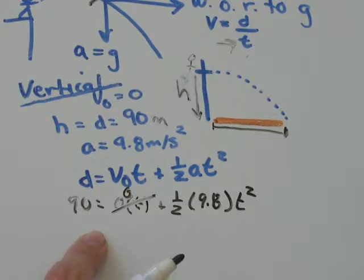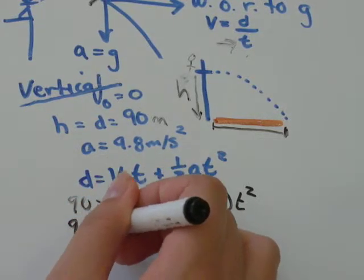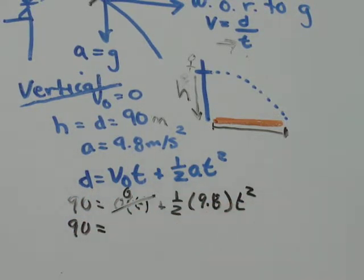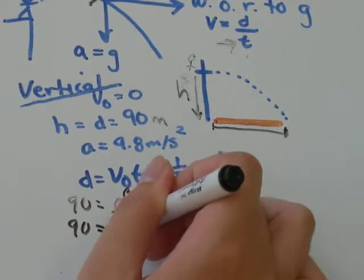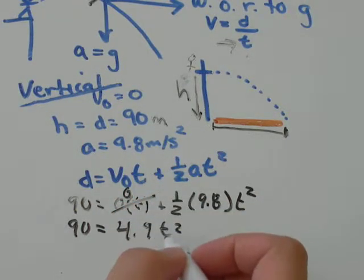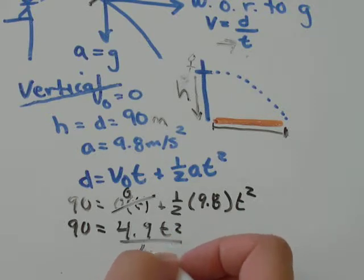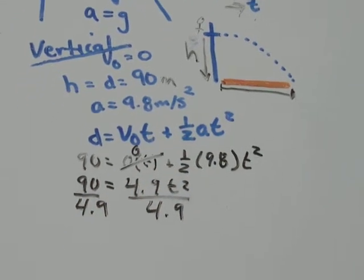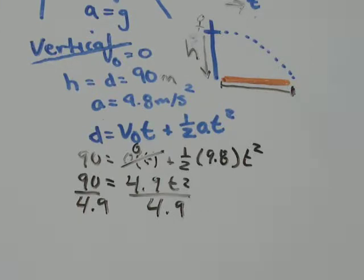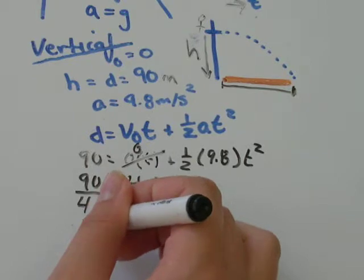All I'm going to do is simplify this. I have 90 equals 9.8 times a half. 9.8, you can divide by 2, 4.9 T squared. To get T squared by itself, I'll just divide by 4.9 on both sides. 90 divided by 4.9, I get that's equal to about 18.4,